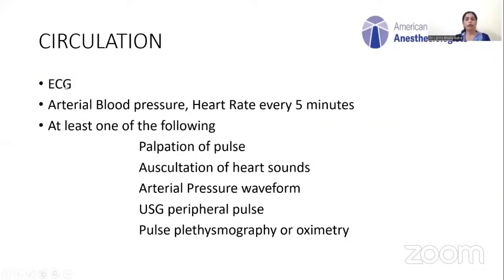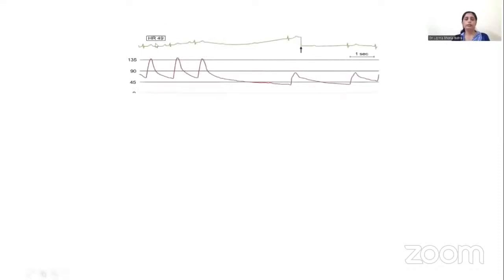Circulation should be monitored by continuous display of ECG and measurement of heart rate and arterial blood pressure every 5 minutes. ASA mandates that at least one of the following must also be measured throughout anesthesia: palpation of pulse, auscultation of heart sounds, observation of arterial pressure waveform, or waveform by ultrasound, pulse plethysmography, or oximetry. A digital heart rate monitor may display a rate of 49 whereas observation of ECG and invasive blood pressure waveform reveals an asystole lasting almost 4 seconds — emphasizing the need for ECG monitoring during surgery.